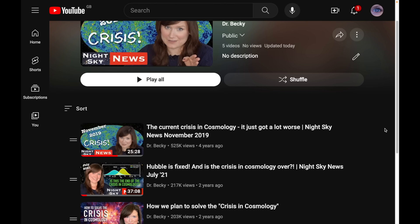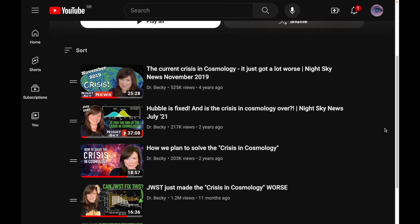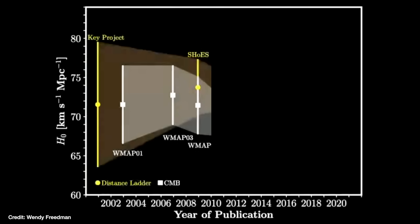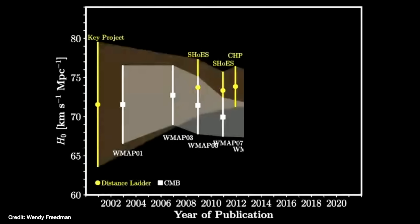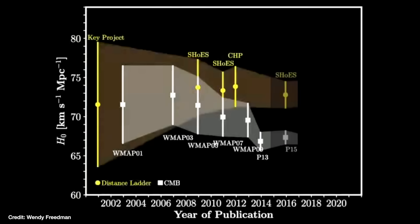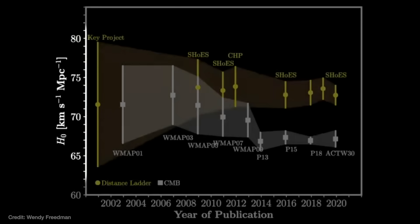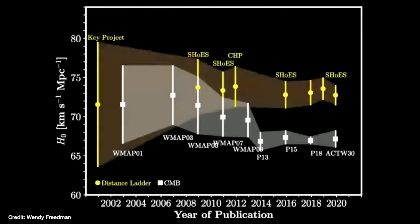I've made a lot of videos on this channel about the crisis in cosmology before, which I'll link below if you want more detail. But a quick recap: essentially this crisis is that we have two main ways of measuring the current expansion rate of the universe, and therefore also the universe's age. And as those two methods have gotten more precise, they now no longer agree within their uncertainties. This number on the rate of expansion of the universe is called the Hubble Constant, hence Hubble Tension.